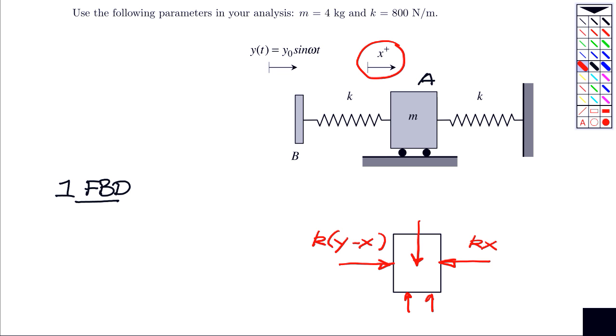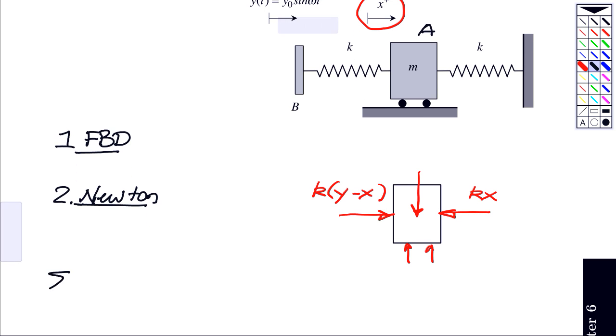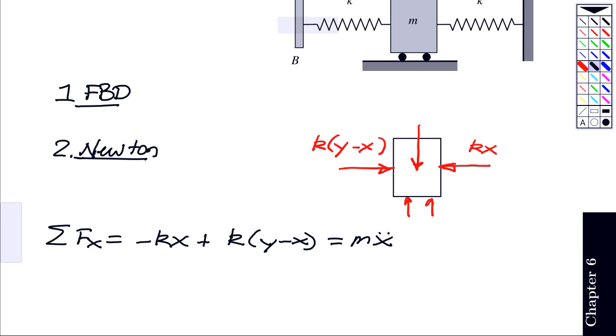But what's important to us is what's going on in the x direction. So as I use Newton's second law, when I sum forces in x, I get minus kx. Again, x is positive to the right. That spring force is pointing to the left, so it's a minus. The spring force on the left side is pointing to the right, so that's a plus. And therefore, that is equal to M A, which is M x double dot. So our equation of motion for this system is M x double dot plus 2kx is equal to k times y. So that's k times y naught times sine omega t.